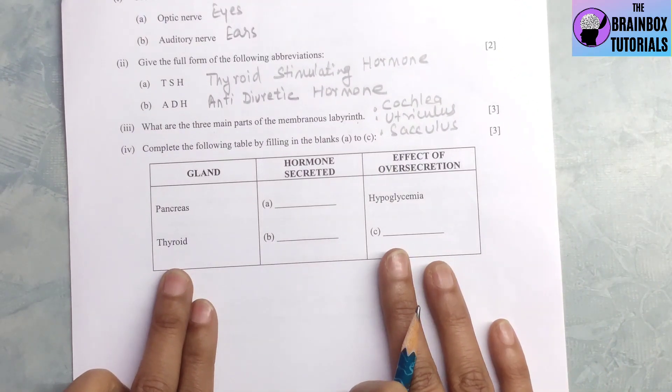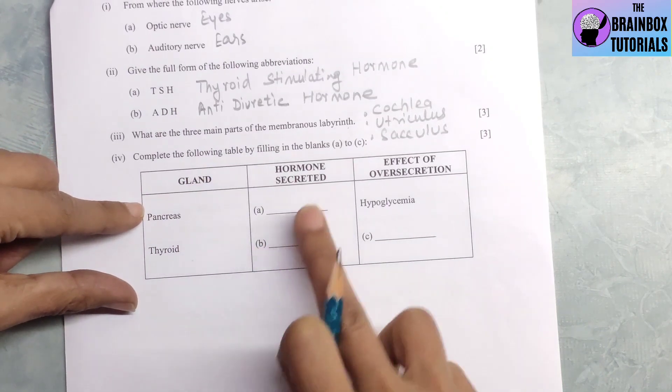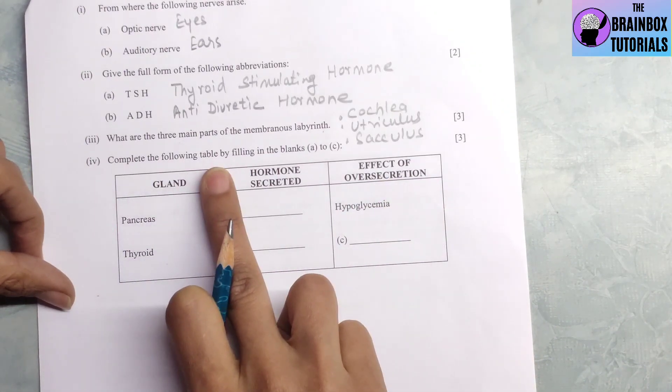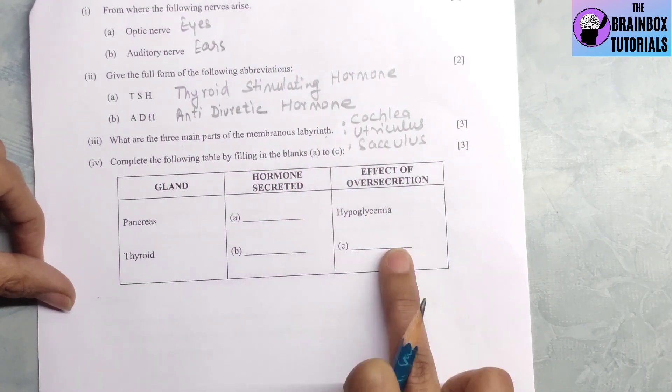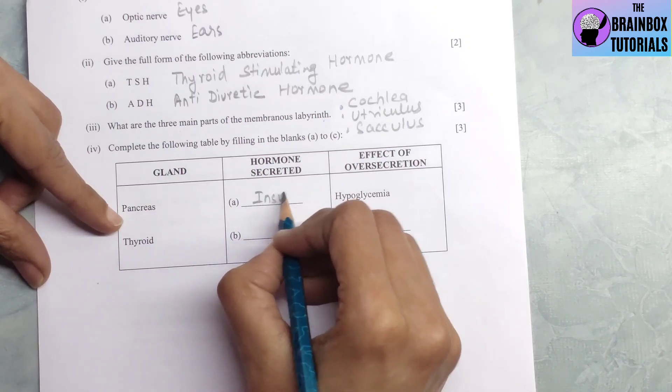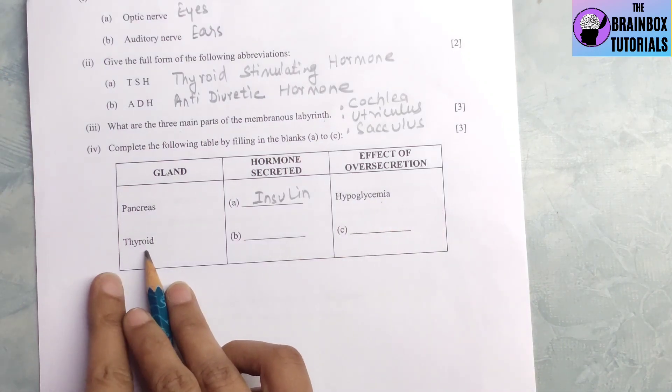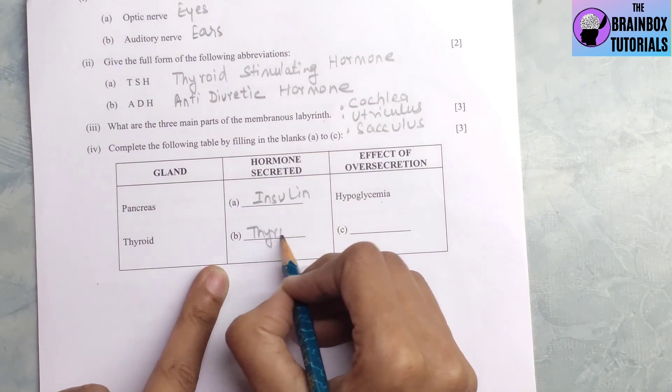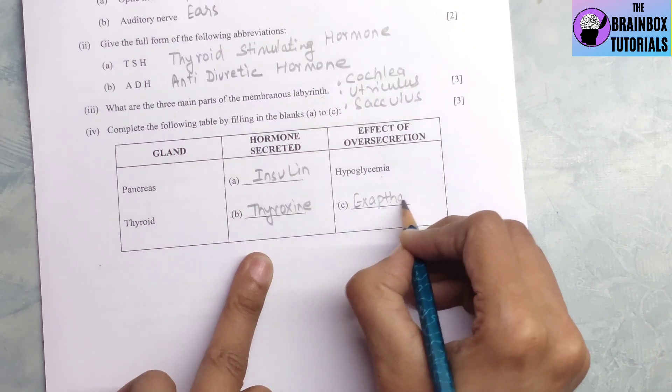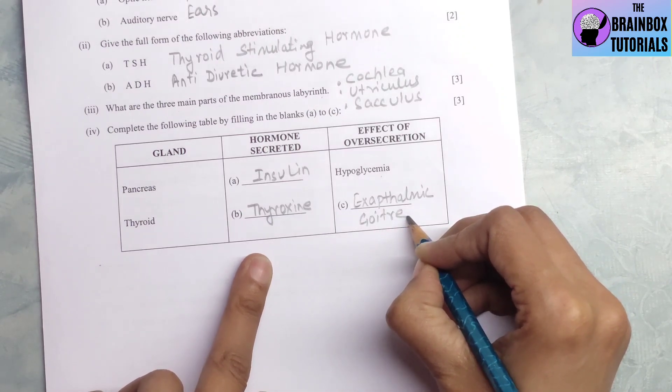This is last part. A table has been given from endocrine gland chapter. Three columns: name of the gland, name of the hormone secreted, and effect of over secretion of the hormone. Complete the following table by filling in the blanks A to C. Number 1, pancreas gland, hormone secreted will be insulin. Effect of over secretion of insulin is hypoglycemia. Next part, thyroid gland, hormone secreted is thyroxine. Effect of over secretion of thyroxine is exophthalmic goiter.